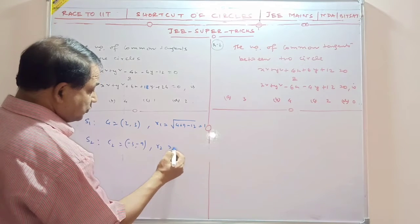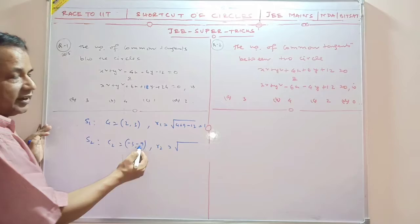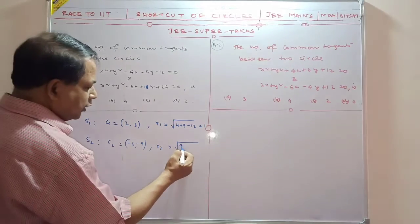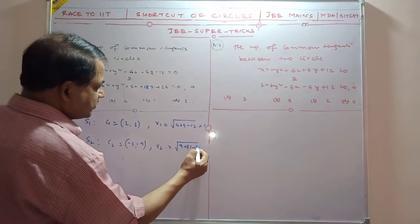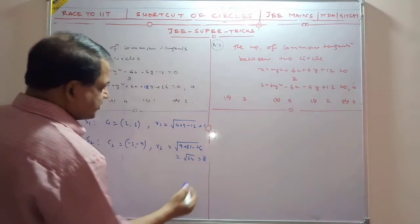And what is R2? This is 9 plus 81 minus 26. So that is 64. So R2 is 8.